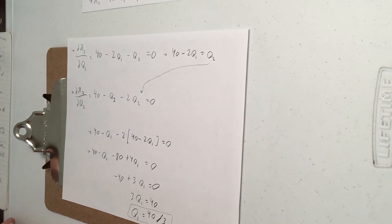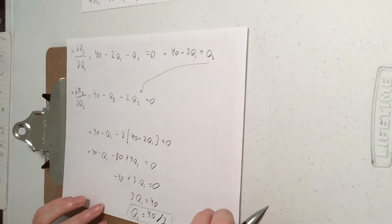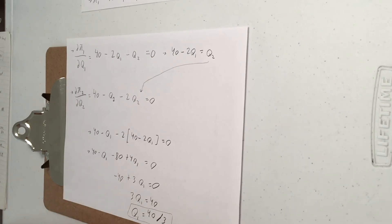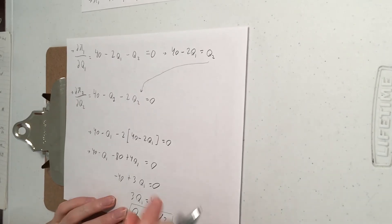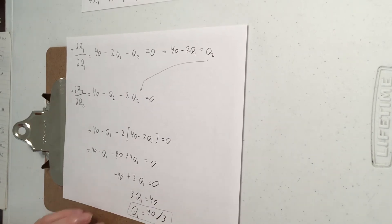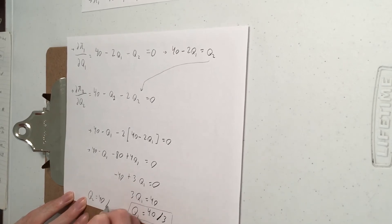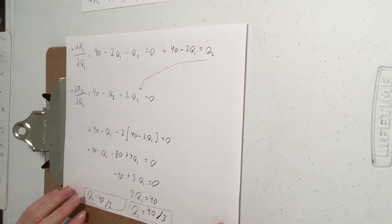So the game is symmetric. So by symmetry Q2 better also be 40 over 3. If you don't believe me, you can go and plug into our equation back here and that's what you'll get. Now if the game was not symmetric, you'd really want to take this number and plug it back in to find Q2. But in this special case, I have a shortcut.